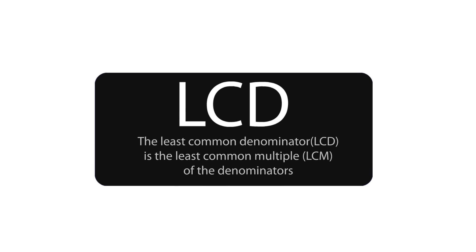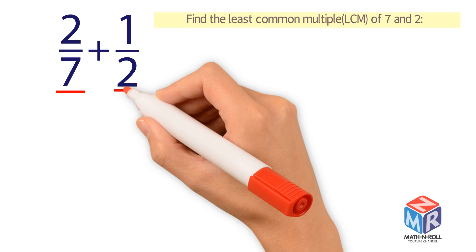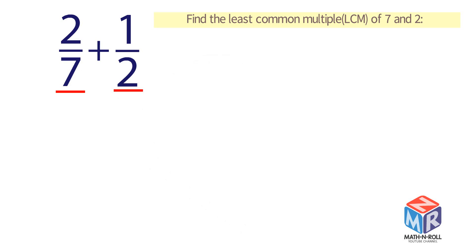So we need to find the least common denominator of these fractions. The least common denominator is the least common multiple, LCM, of the denominators. The denominators are 7 and 2. Find the least common multiple of 7 and 2.